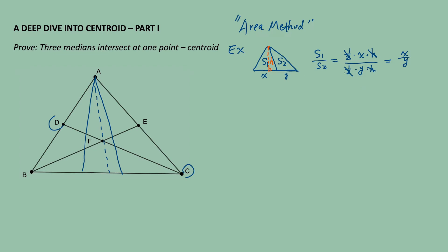Particularly, if this line here is the median, then we know x is going to be equal to y, and therefore S1 is equal to S2. Again, understanding this example well is going to be very helpful for understanding the proof we are going to do.